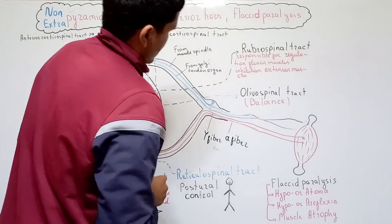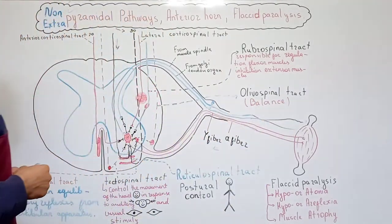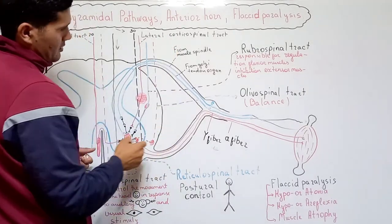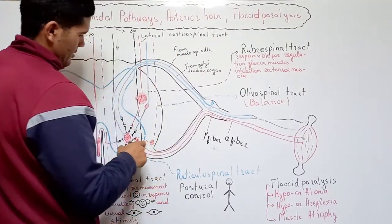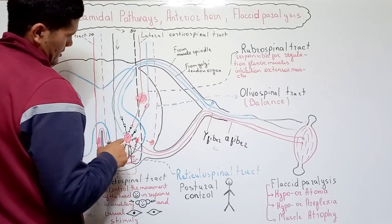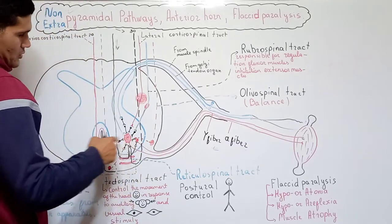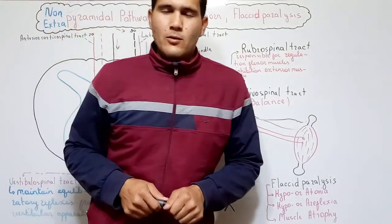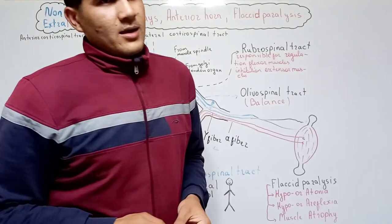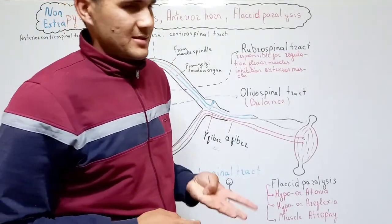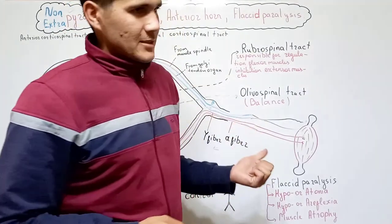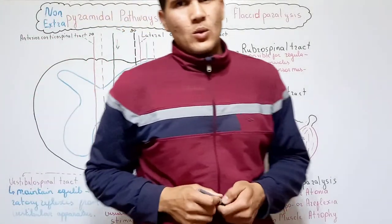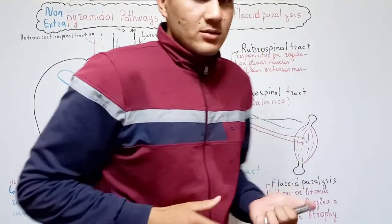Our next tract is the olivospinal tract, located here. From the olive it is initiated, and via interneurons it binds to the alpha motor neurons. One of the main functions of the olivospinal tract is keeping our balance. Additionally, there is research suggesting that the olivospinal tract conveys information from proprioceptors that we don't consciously feel.